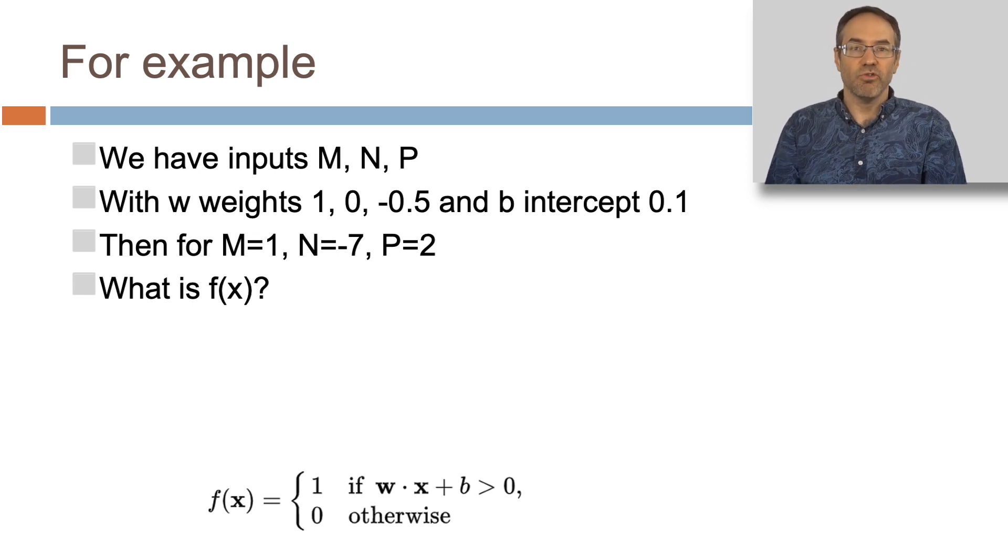So f(x) in this case will be 1 times 1, that's 1, 7 times 0, that's 0, and 2 times -0.5, which is -1, giving a sum of 0. But then we've got that intercept of 0.1, so we get 0.1, and at the end of that, it's going to say it's greater than 0, and it's going to output a 1.